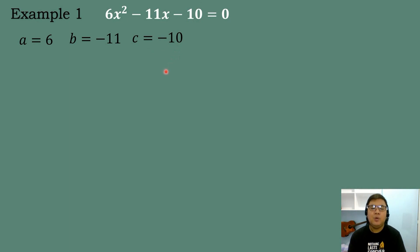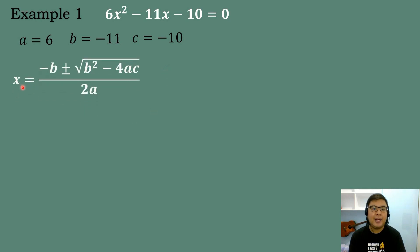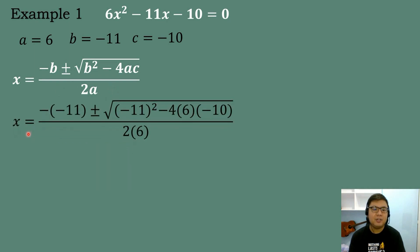After we have identified the values of A, B, and C, we will now use the quadratic formula: X equals negative B plus or minus the square root of B squared minus 4AC, all over 2A. Substituting the values: X equals negative times negative 11, plus or minus the square root of negative 11 raised to the second power, minus 4 times 6 times negative 10, all over 2 times 6.